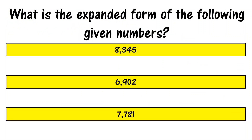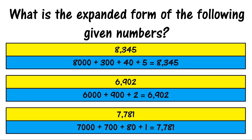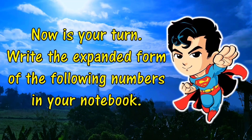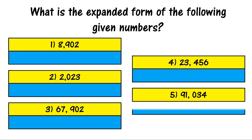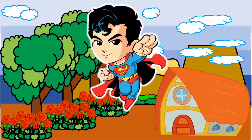What is the expanded form of the following numbers? Eight thousand three hundred forty-five. Six thousand nine hundred two. Seven thousand seven hundred eighty-one. Now it's your turn to answer these questions.